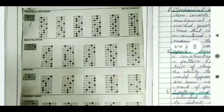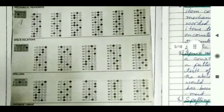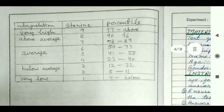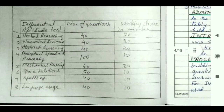For performing DAT, you can get this type of answer sheet from your psychological lab. In this answer sheet, participants' answers are recorded. Then you have to make this type of table where the number of questions and working time is recorded.